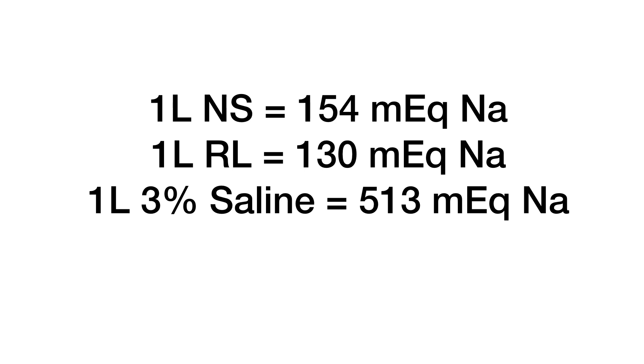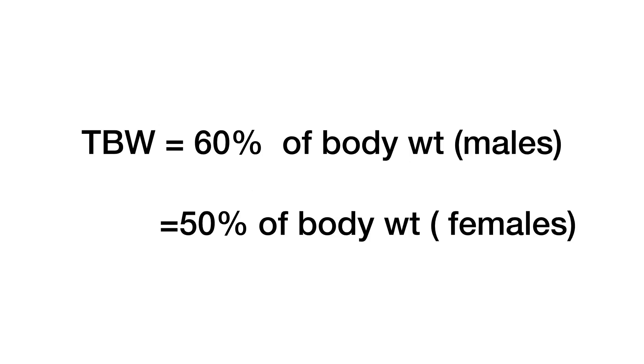Total body water is calculated by multiplying total body weight by 0.6 for males and total body weight by 0.5 for females.